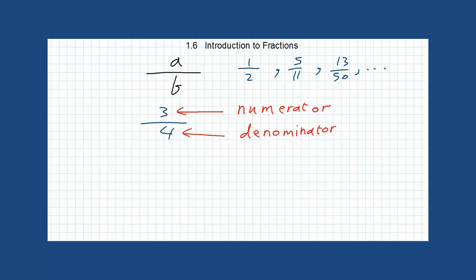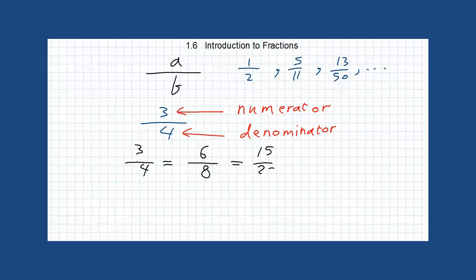Just by multiplying both the numerator and the denominator by a constant number, you will have many equivalent fractions. For example, 3 over 4 is equal to 6 over 8 — multiply both by 2. If you multiply by 5, you get 15 over 20. If you multiply by 10, you get 30 over 40, and so on. There are endless equivalent fractions for this fraction.